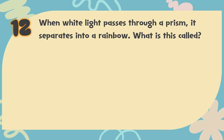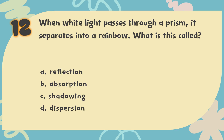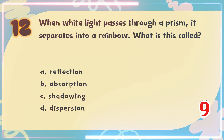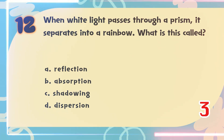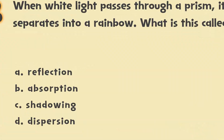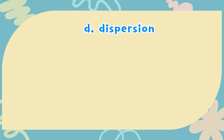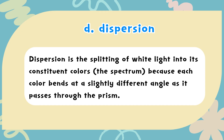Number 12. When white light passes through a prism, it separates into a rainbow. What is this called? The choices are: A. Reflection, B. Absorption, C. Shadowing, D. Dispersion. The correct answer is D. Dispersion. Dispersion is the splitting of white light into its constituent colors — the spectrum — because each color bends at a slightly different angle as it passes through the prism.